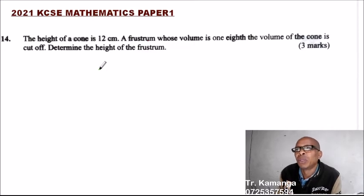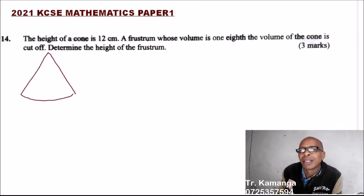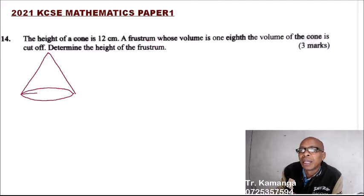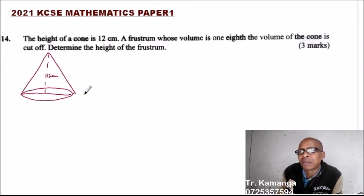In Form 2 you learned similarities and enlargement. So before we do the question, let me use a diagram to explain this. So let's assume this is a cone — the full cone. The height is 12 cm. It was cut off, so a cone was cut off so that we are left with a frustum.